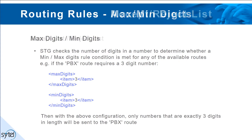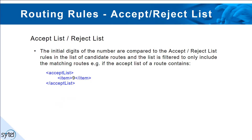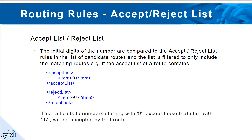The accept and reject list compares the first digits of the number with a list in the accept or reject category and then rejects or accepts the number based on this. For example, if the accept list contains 9 and the reject list contains 97, then calls to numbers commencing 9 — except those to 97 — will be accepted by that route.